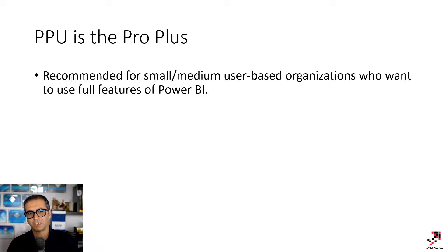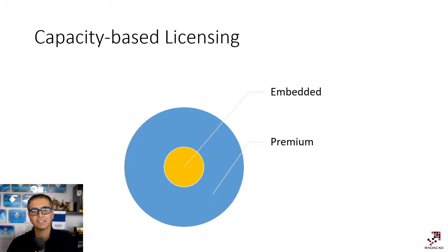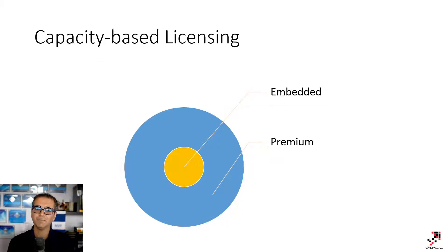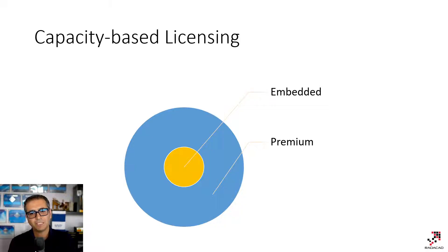What if you have too many users — like thousands of users? Then for those situations, we have other licensing options, which are capacity-based. Capacity-based licensing is usually targeting a large user base. Depending on what features you want, there are two types of licensing in this category: one is called Embedded, and another is Premium. As you see in this diagram, Embedded is also included in Premium. So if you purchase Premium, you have Embedded included. But if you just purchase Embedded, you don't get Premium — just that Embedded part. Also, Embedded is cheaper than Premium.